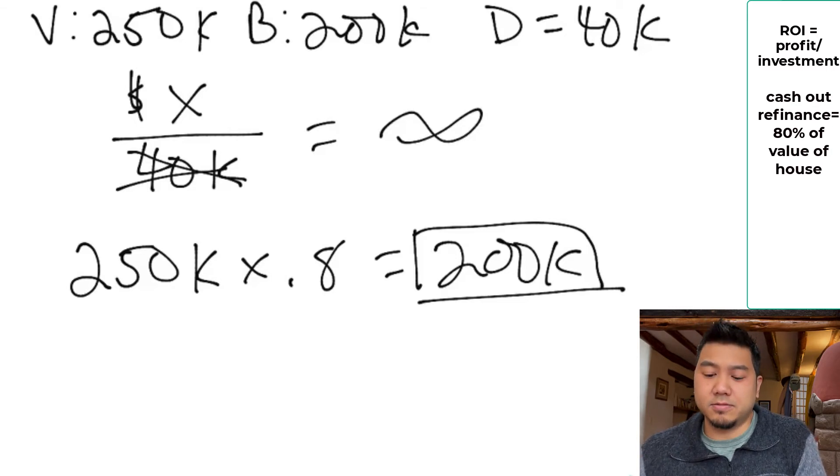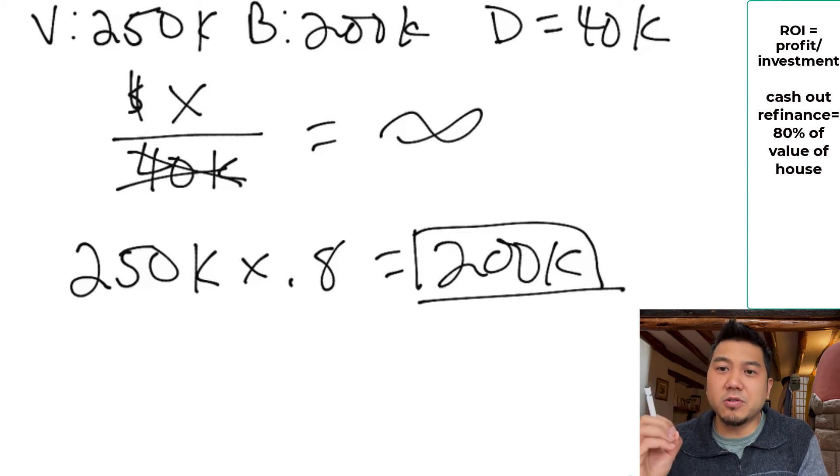Even if it's a dollar, even if you're making a dollar a month, you had $0 invested. That's infinite. Now, most likely a house that's $250,000, maybe you'll make $2,000 a year. Still good money, right? You have no risk in this house. This is why real estate is so powerful.